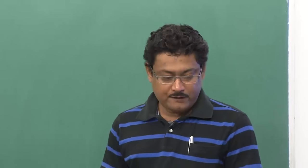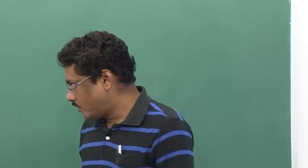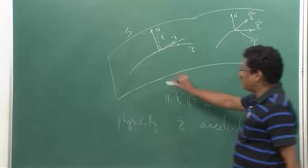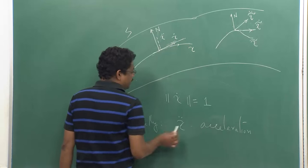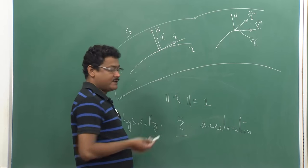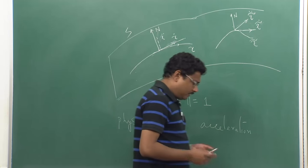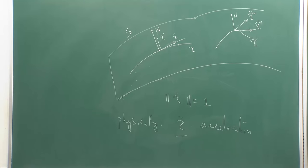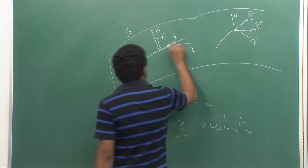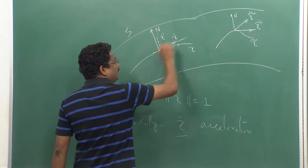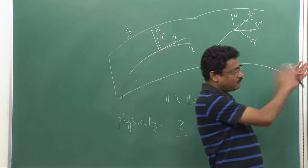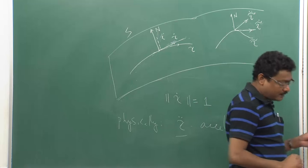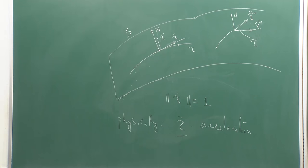Now, if I am working on the surface, what component of the acceleration can I perceive? I can perceive only the component of acceleration which is parallel to the tangent at gamma — that is, parallel to gamma dot. So if I am moving along this curve, I can only perceive what is tangent to the direction I am moving.